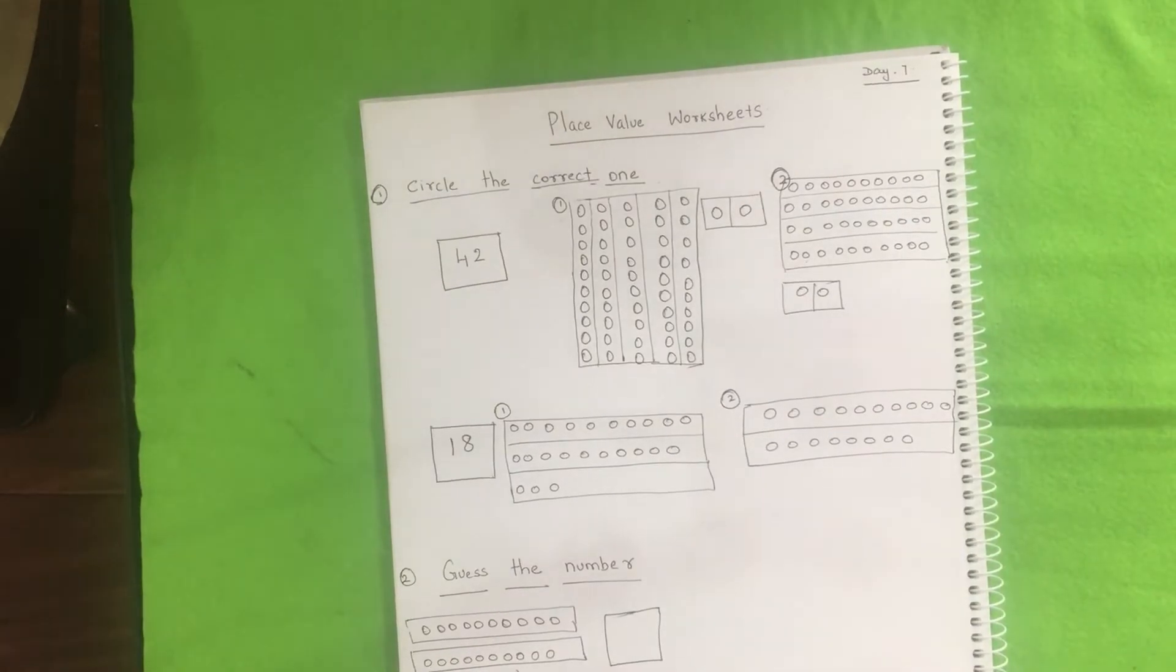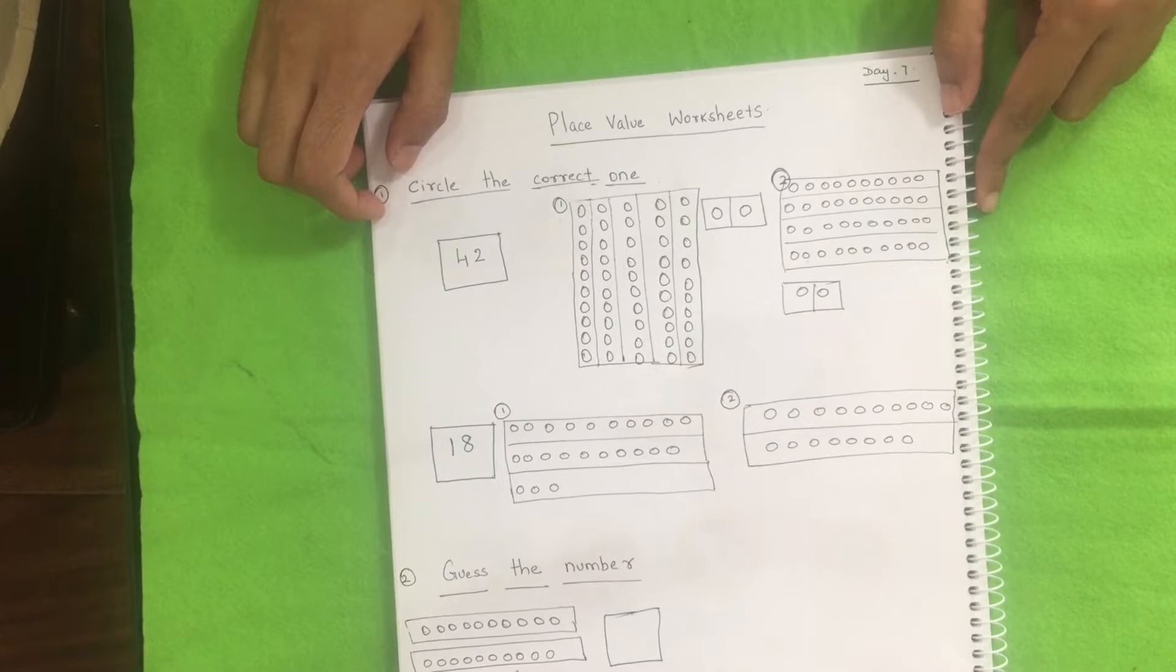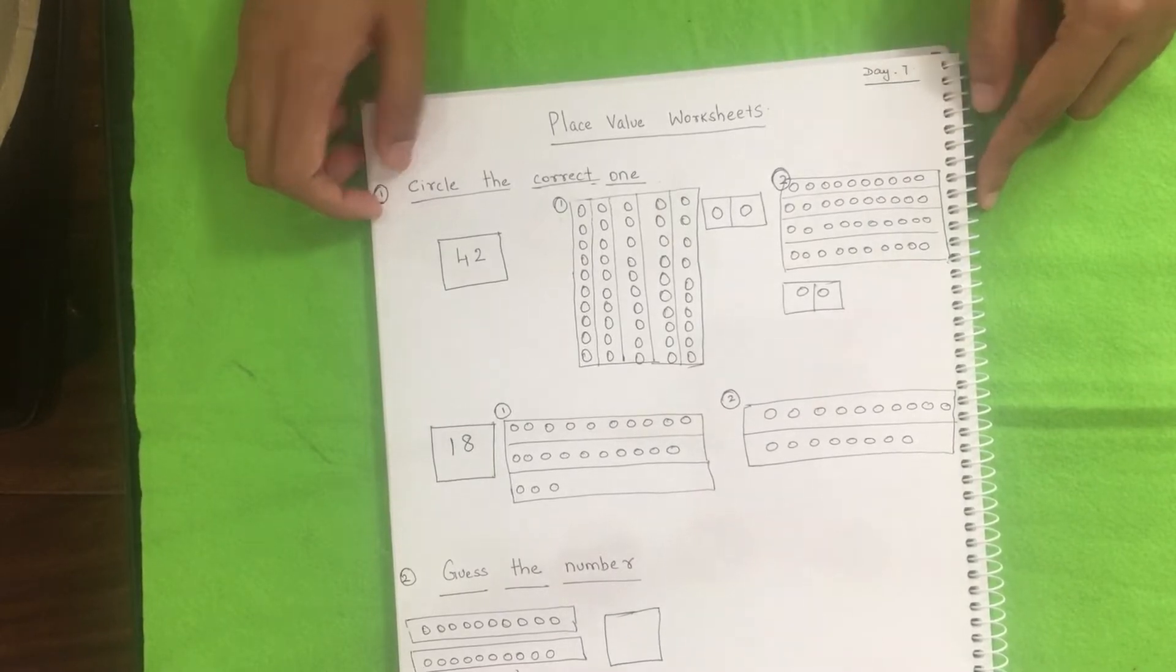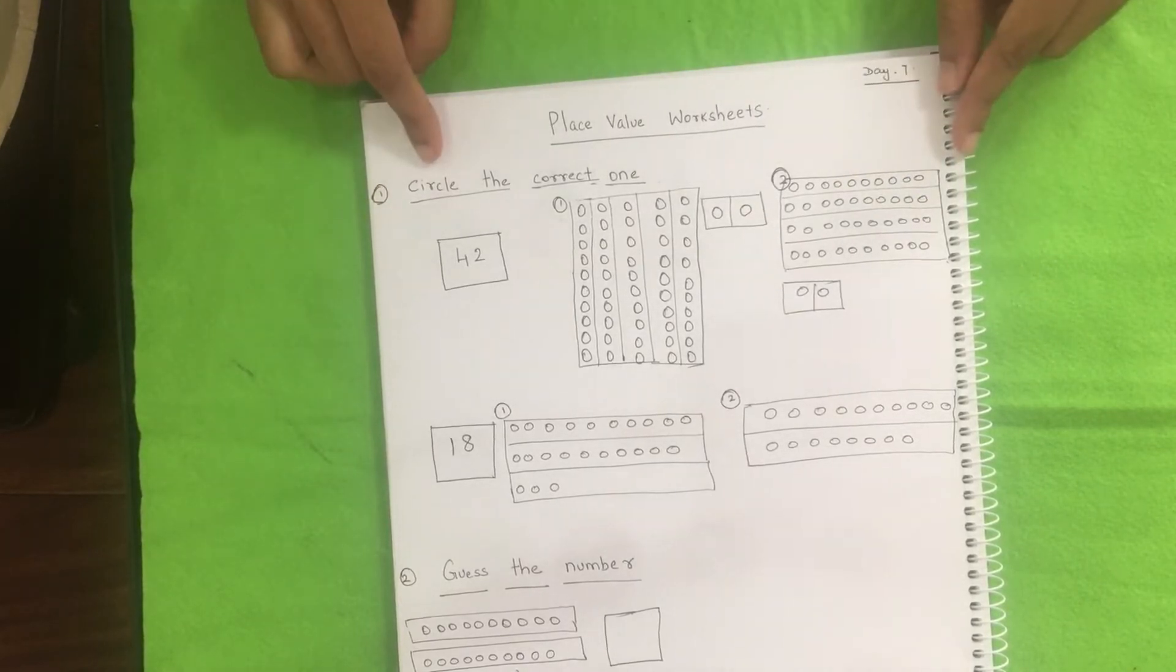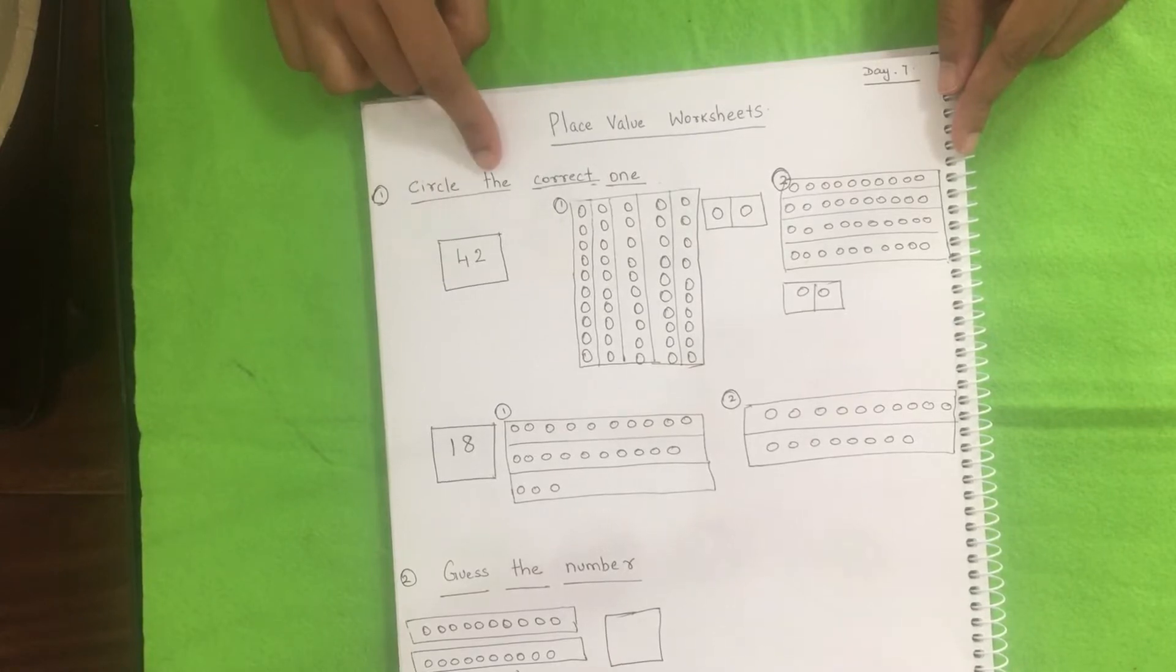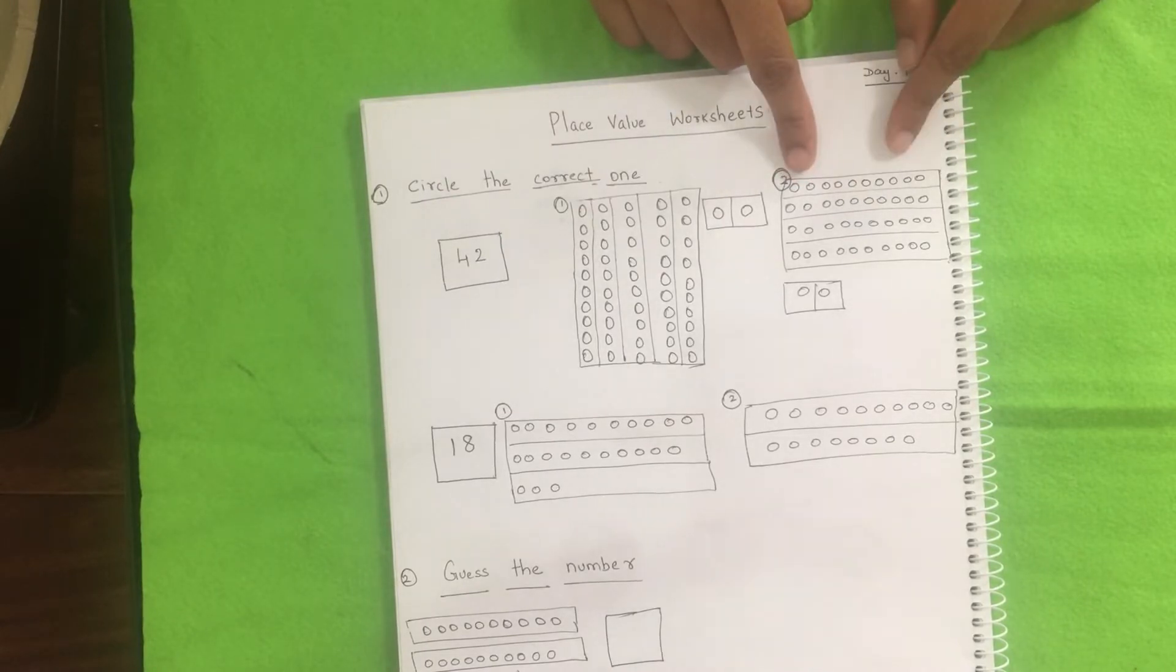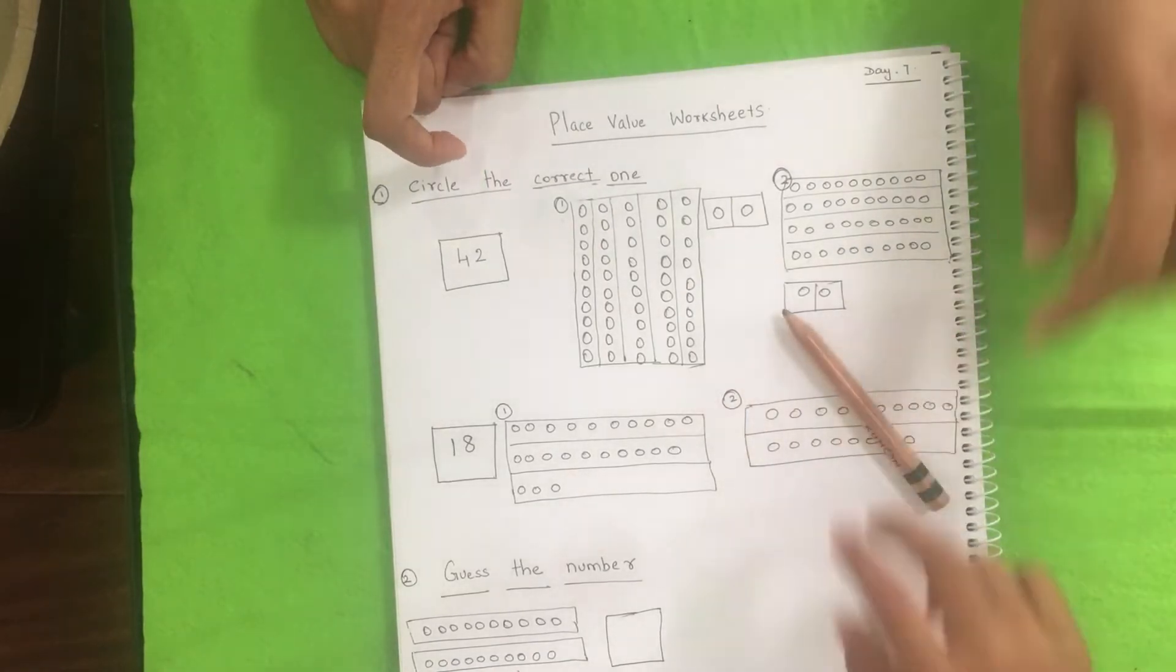So again we are moving into the worksheet where, since I have no splice values, I am just giving the sample worksheet. You can stretch it or reduce it as per your kids' comfortable level. So here this activity is like circle the correct one. I have given the number with two options. So he just needs to find which is the correct quantity that is matching to this number and he needs to circle it.